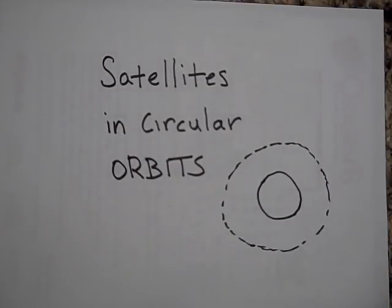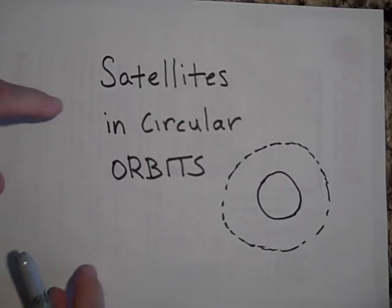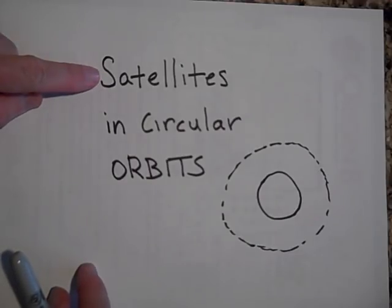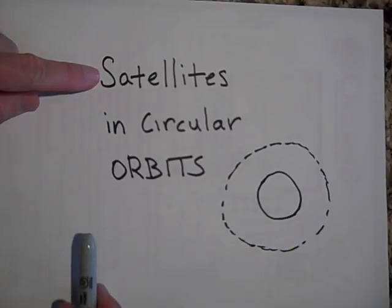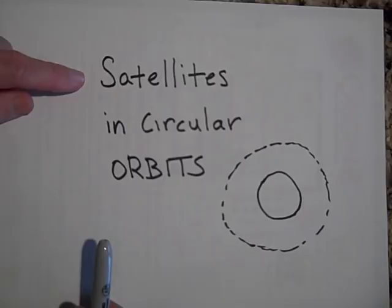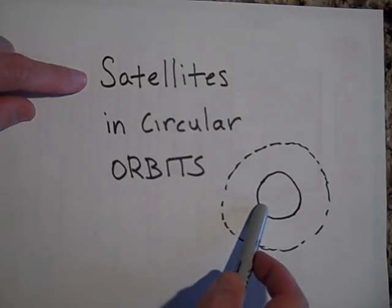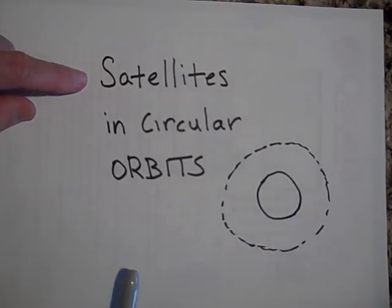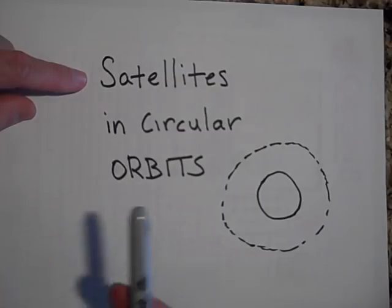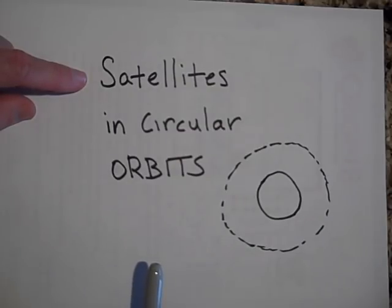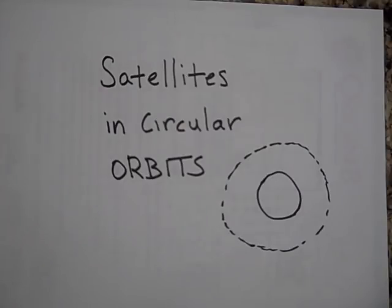I'd like to tell you about satellites when they're orbiting in circular orbits. A satellite can be a communication satellite that orbits the earth. The moon is a natural satellite around the earth. The earth is actually a satellite around the sun. There are all these things that are orbiting, and some of them are in very nearly circular orbits.